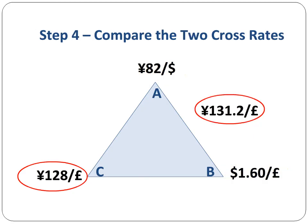In step 4, we compare the quoted cross rate to the implied cross rate. If the two numbers are the same, there is no arbitrage possibility because we will be selling and buying the yen at the same price. In this example, there is a difference as indicated by the two numbers that are circled. We therefore conclude that an arbitrage possibility does exist.